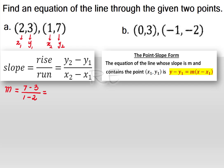Now, 7 minus 3 is equal to 4, and 1 minus 2 is negative 1. Thus, m is equal to negative 4.